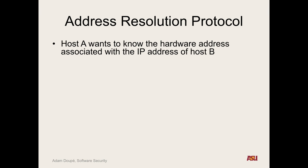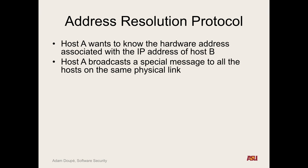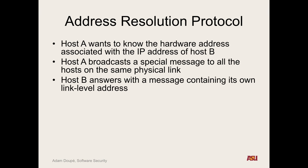We need to ask essentially everybody on the network in our subnet who has this IP address, right? And so the way to do that — there's a special address to broadcast, which means here's an Ethernet packet, send it out to everybody. We want to figure out — we have a message to deliver to everybody. And so everybody gets this packet, and then the host you're trying to talk to with that IP address responds and says yes, here's my link level address. If we did this every time we wanted to send a packet, that would be incredibly slow and inefficient — our network would be flooded. So that's why we keep a cache.